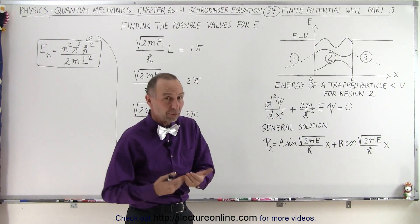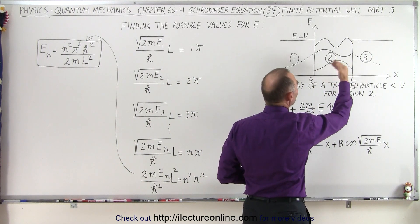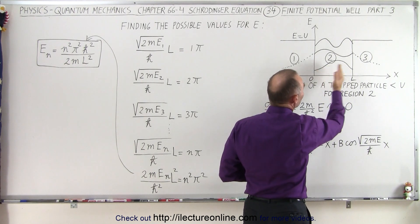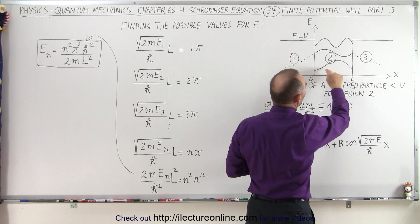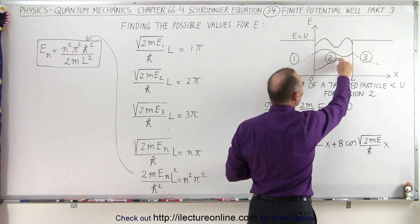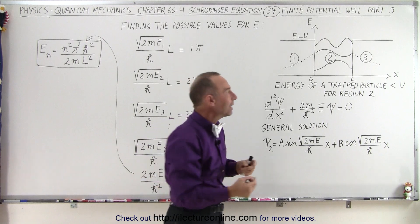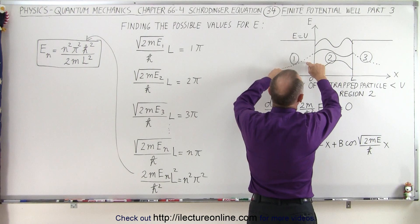We also realized from the previous video that the function in region 2 is going to be a sine or cosine function, such that the length or width of region 2 should equal a half wavelength, a full wavelength, one and a half wavelengths, and so forth. That's the only way the function form inside region 2 can match up what it looks like...